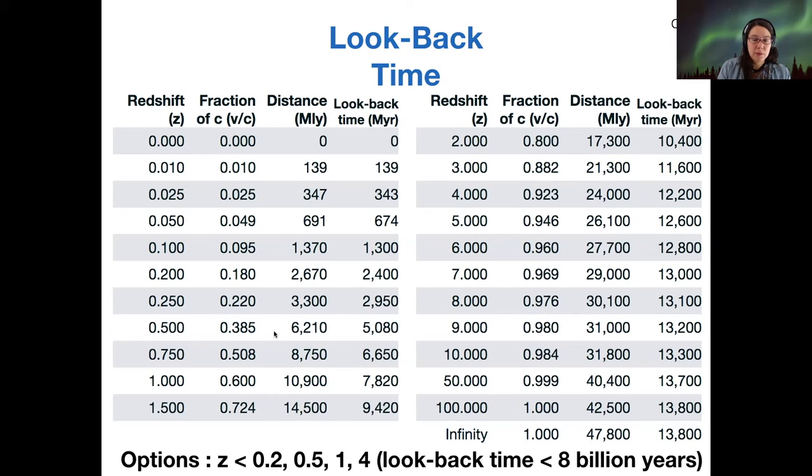I'm seeing the most votes for C. If we have a look-back time of 8 billion years, that's 7,800 million years, and so that corresponds to a redshift of somewhere around one. We know if our look-back time is less than about 8 billion years, it has to be less than 1.